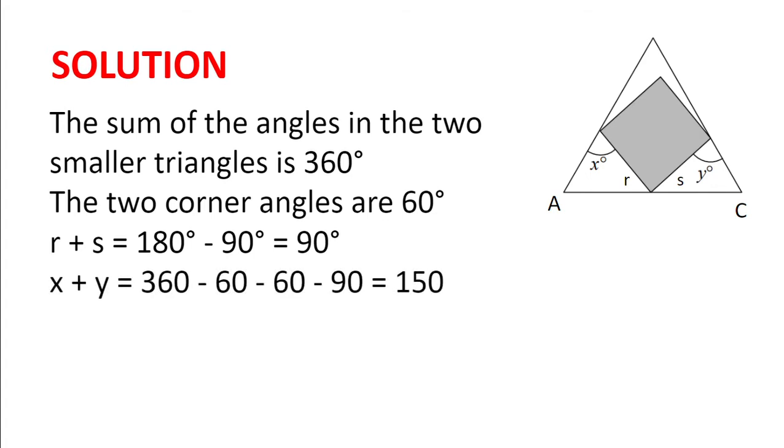So, x plus y is the sum of the angles in the two smaller triangles minus the two corner angles, angles A and C, minus the sum of angles R and S, which is 360 minus 60 minus 60 minus 90, which is 150.